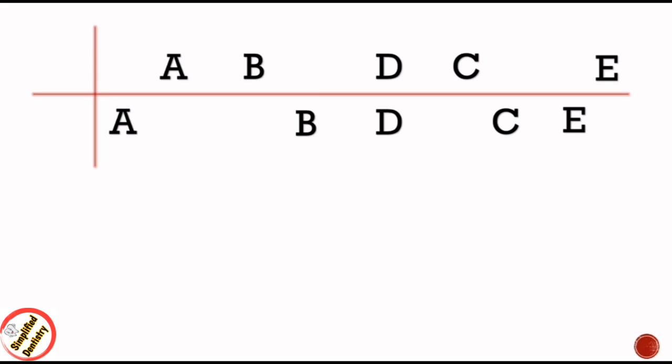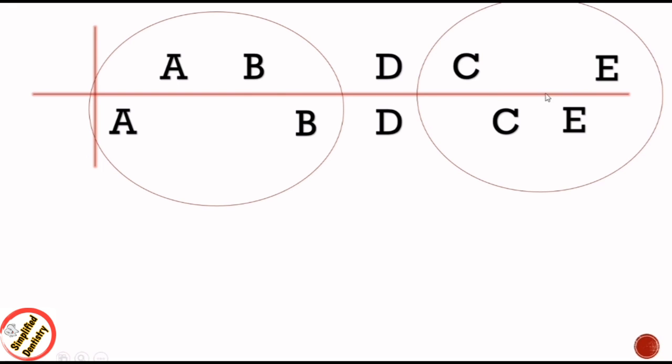The second way is to remember the mean age of eruption of primary teeth. Again remember the eruption sequence as ABDCE and write it down for both maxillary and mandibular teeth of one side. Divide it into three parts: the first part includes central incisor and lateral incisor (A and B), the second part only first molar (D), and the third part canine and second molar (C and E).